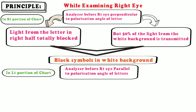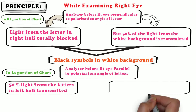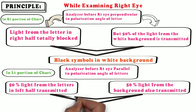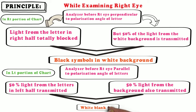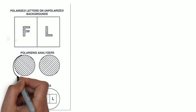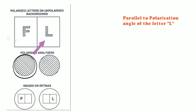Now let's see what happens in the left portion of the chart. The analyzer before the right eye is parallel to the polarization angle of the letter. Fifty percent of light from the letters in the left half is transmitted and 50 percent of light from the background is also transmitted. As a result, a white blank field is produced.